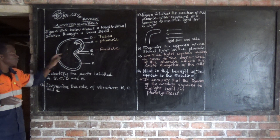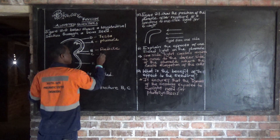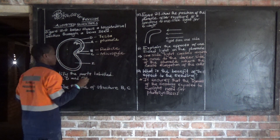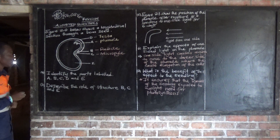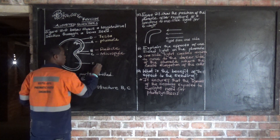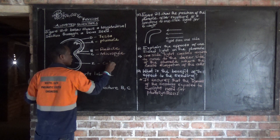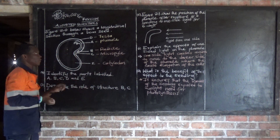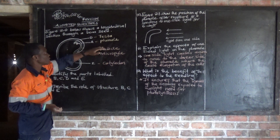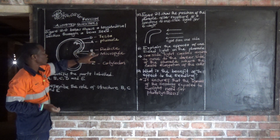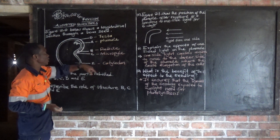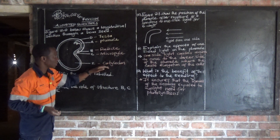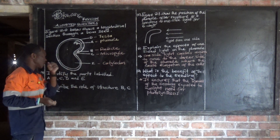Then we have our C, which is our micropub. Then we have our cotlidon. So these are the parts: we have our tester which is D, then our prune which is A, our radical which is B, our micropub which is C, and our cotlidon which is E.